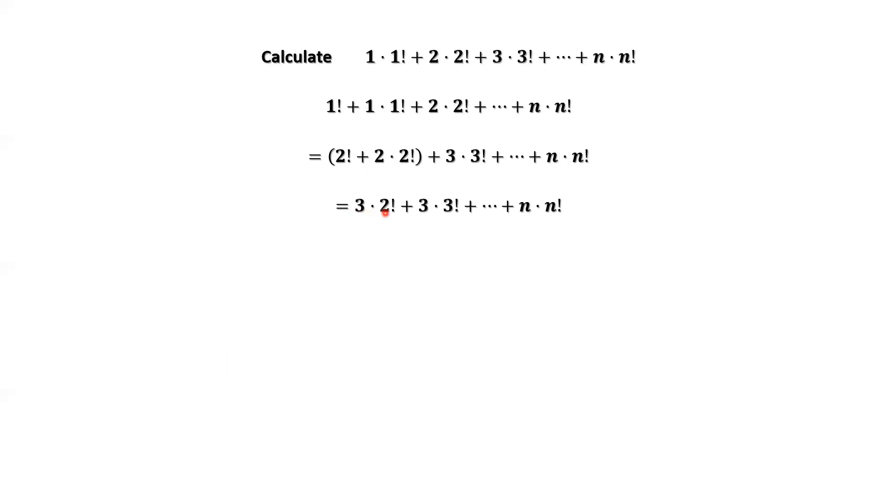3 times 2 factorial equals 3 factorial. Then we group 3 factorial with 3 times 3 factorial, which equals 4 factorial.